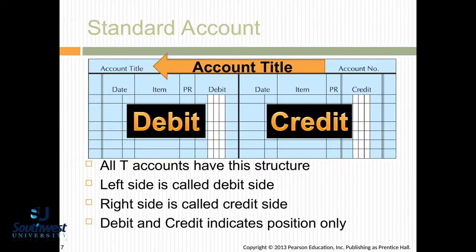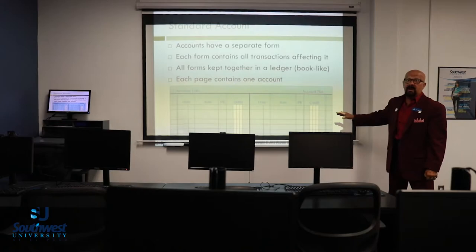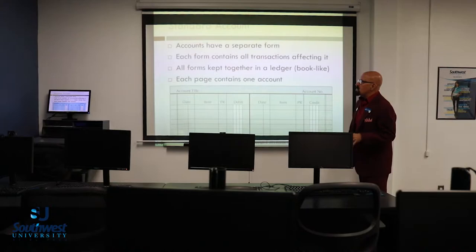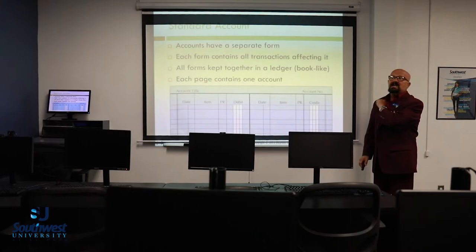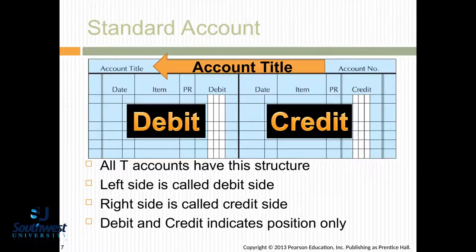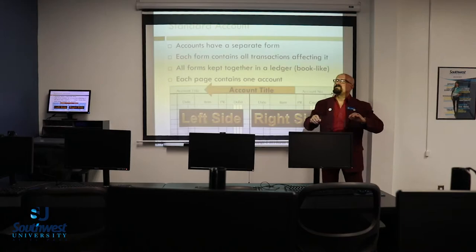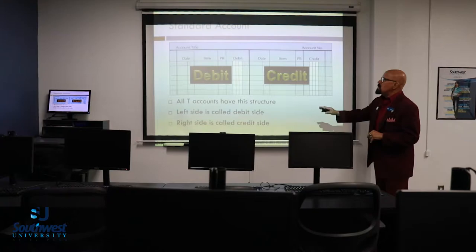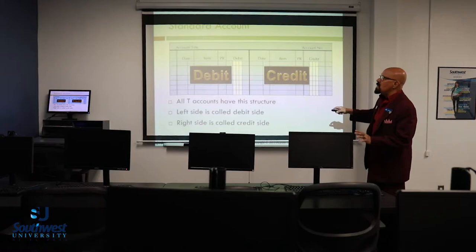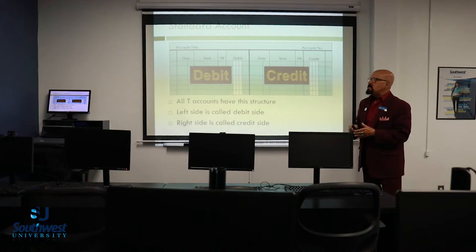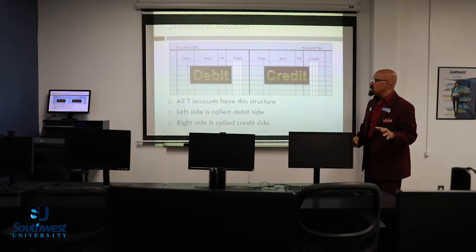This is what it's going to look like, whether you're on a manual system or computerized — and I highly recommend you be computerized. This goes back years and years. On the left side you'll have debits, and on the right side you'll have credits. All T-accounts have this structure — it's shaped like a T, which is why they call it a T-account. This is the basis of accounting. Debit and credit indicates position only: debit on the left, credit on the right.